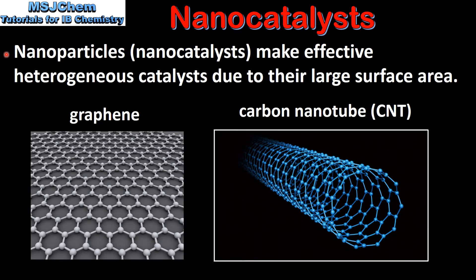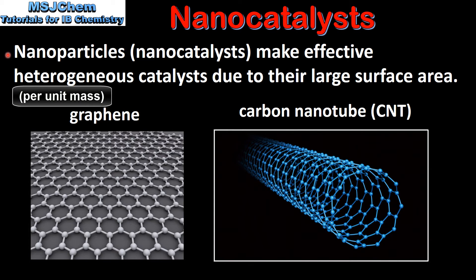Next we look at nanocatalysts. Nanoparticles or nanocatalysts make effective heterogeneous catalysts due to their large surface area. Here we have two examples of carbon nanocatalysts: on the left we have graphene and on the right we have a carbon nanotube.